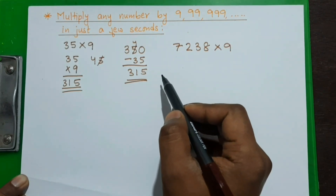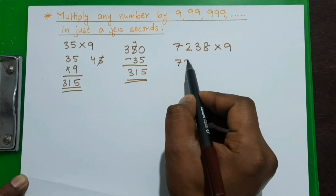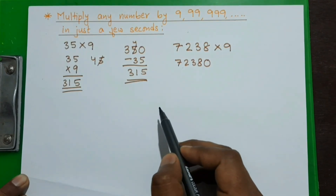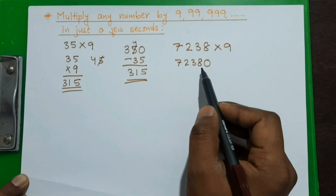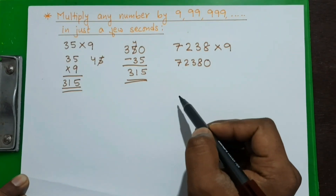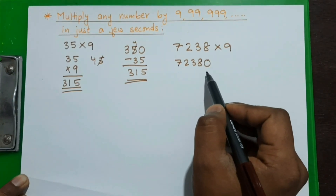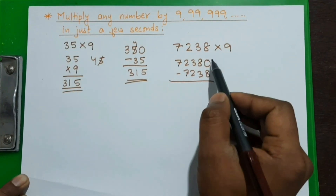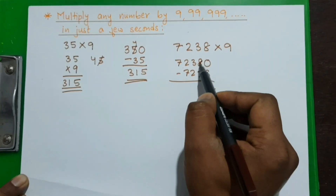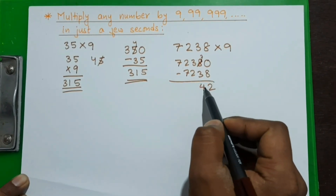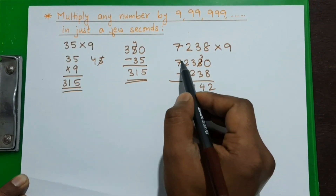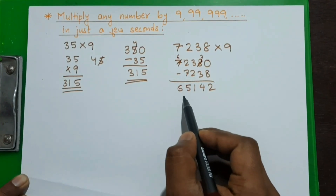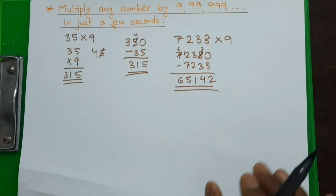Using our short multiplication method: first we multiply 7238 by 10, putting a zero behind the number. Then we subtract the original number from this product. Writing the number from the back — 8, 3, 2, 7 — we subtract: 10 minus 8 is 2, 7 minus 3 is 4, 3 minus 2 is 1, 12 minus 7 is 5, giving us 65142. Isn't it very quick!